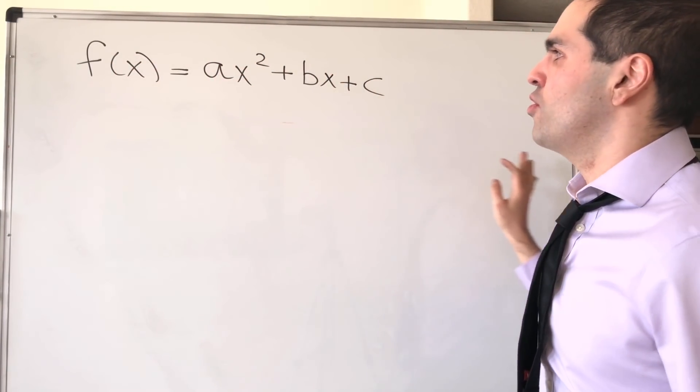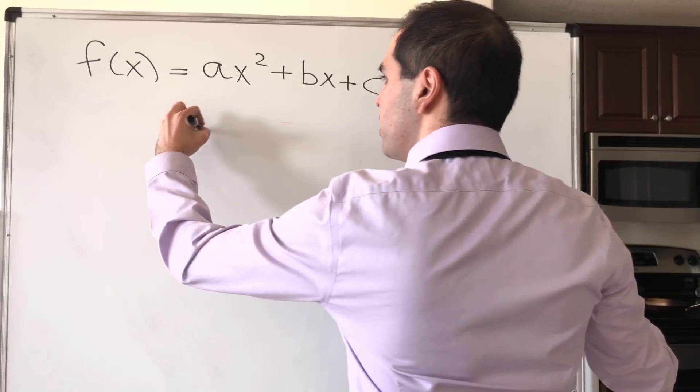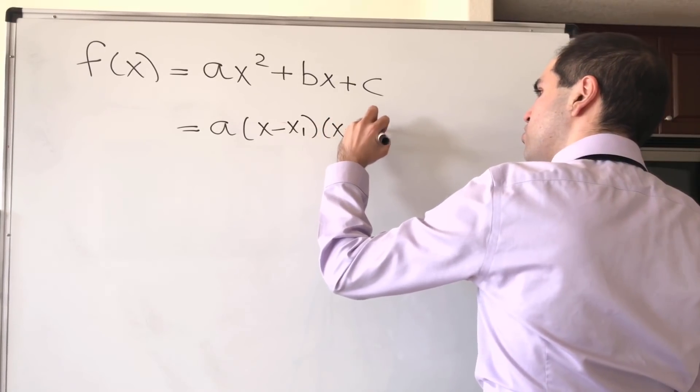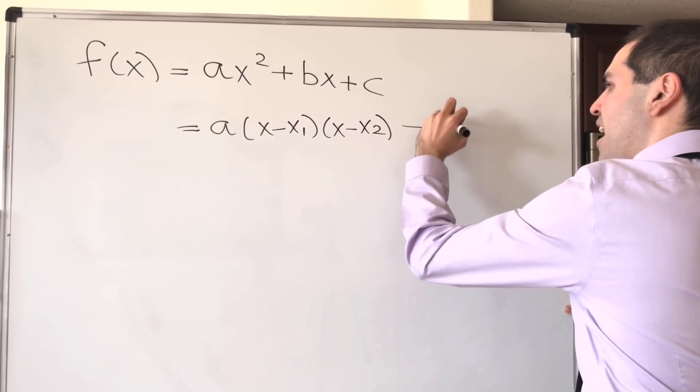consider f of x is ax squared plus bx plus c, which you can factor out as a times x minus x1 times x minus x2, which have roots x1 and x2.